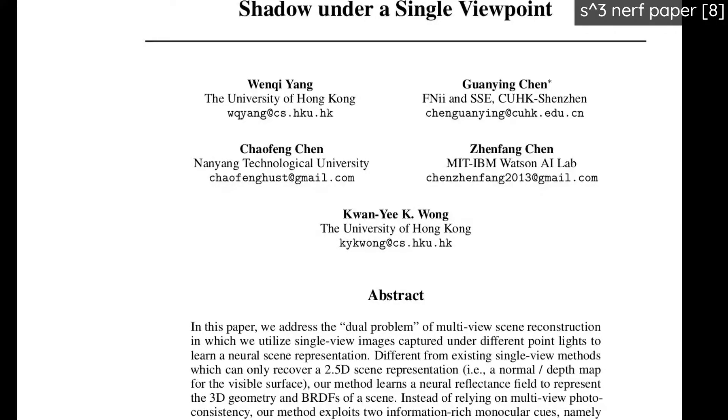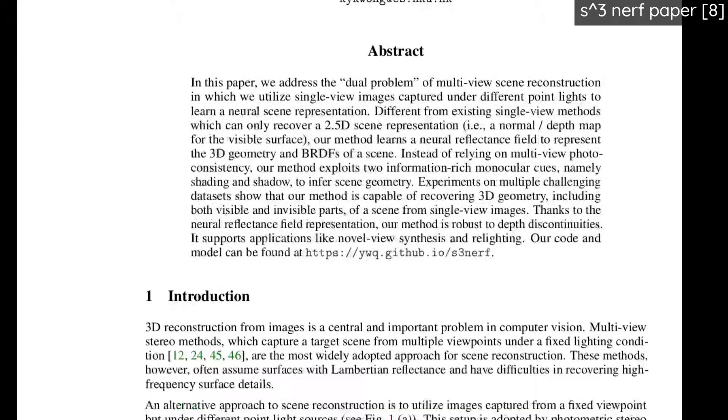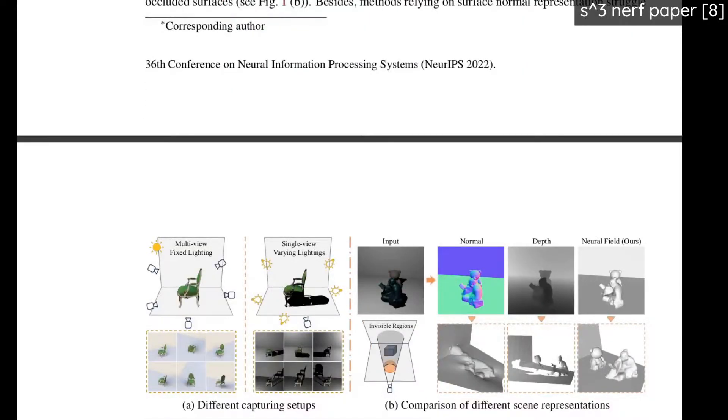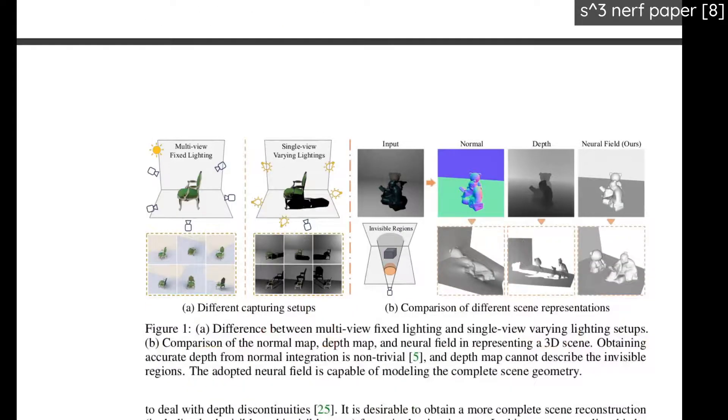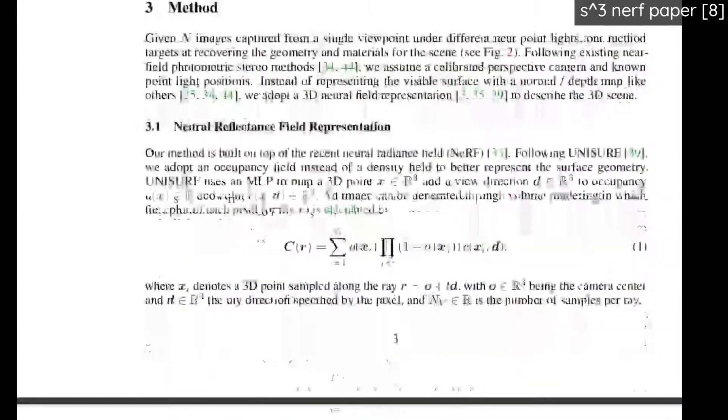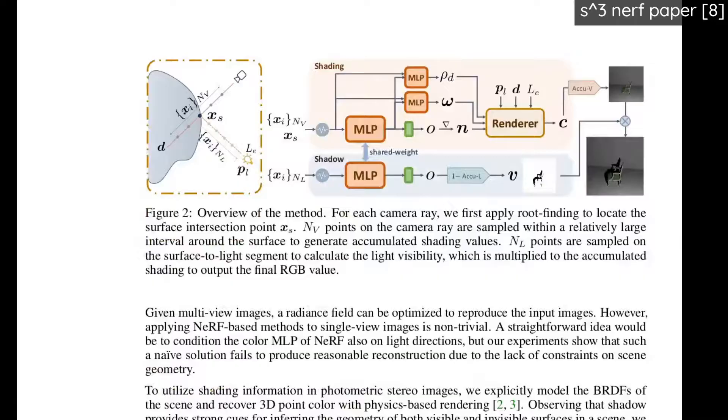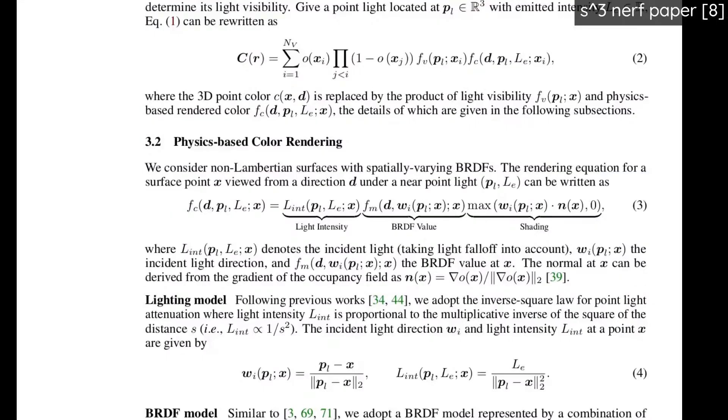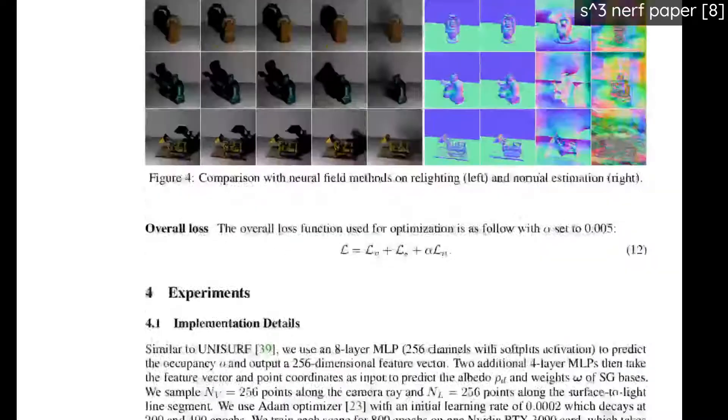Neural reflectance fields from shading and shadows under a single viewpoint - basically this is the idea of using shadow information and a single image, or single viewpoint I should say, in order to calculate out a NeRF. So it's using changes in light and you're trying to find out if you can use the information from the shadows in order to calculate out a NeRF. And yeah, that's crazy too, because you're using shadows.